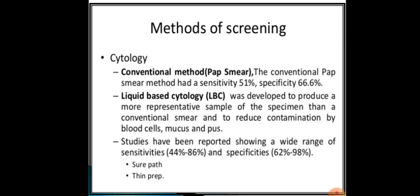Ayre's spatula and an endocervical brush are used for sampling. Cells are spread on a single slide and fixed immediately. The sample is sent to the laboratory and examined under the microscope. Cells are identified as dyskaryotic — large nuclei with abundant cytoplasm — and carcinoma in situ cells.